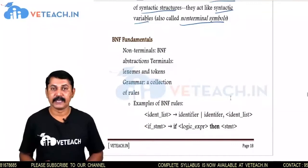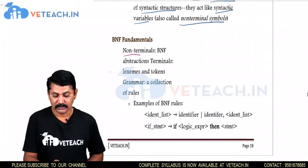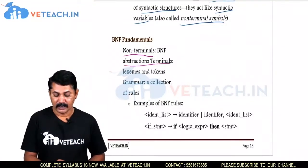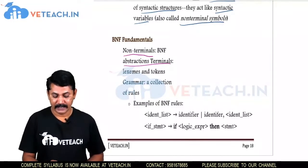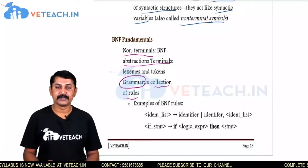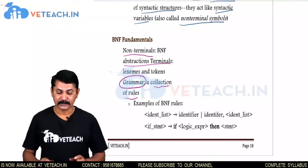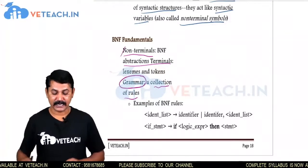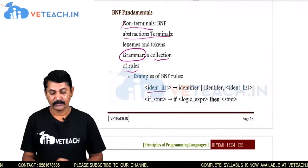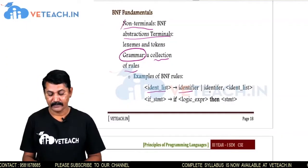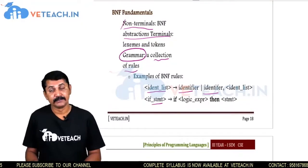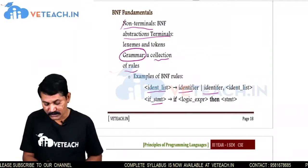The fundamentals of BNF include: non-terminals, BNF abstractions, terminals, lexemes and tokens, and grammar as a collection of rules. Here is a small example: non-terminals, terminals, abstraction symbols, and grammar. In examples of BNF rules, an identifier list implies to an identifier and identifiers. An if-statement is implemented as: if the condition or logic that we want to check is satisfied, then the statement is given.